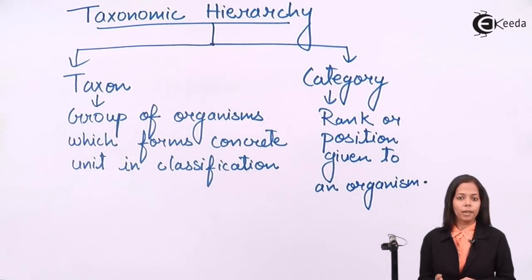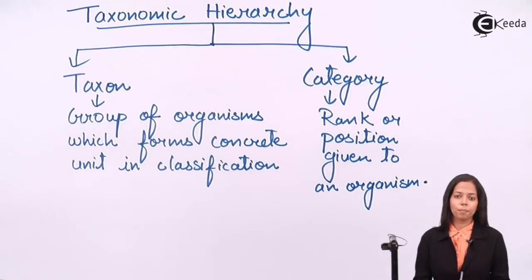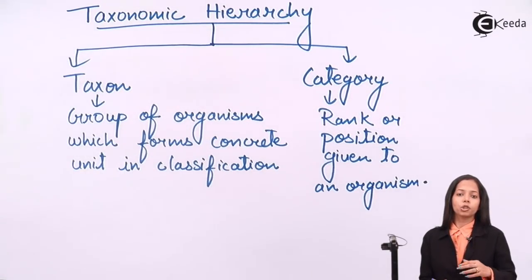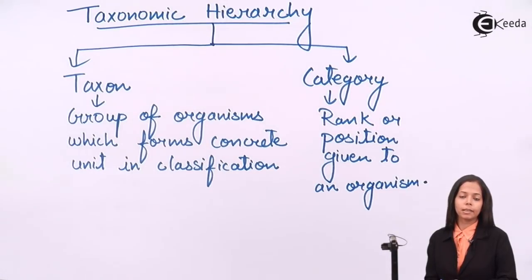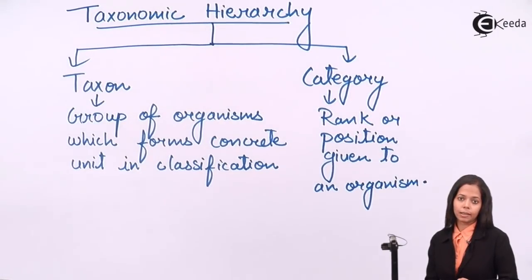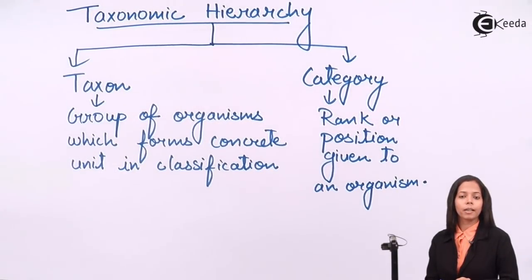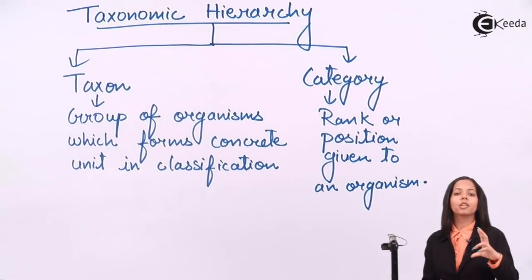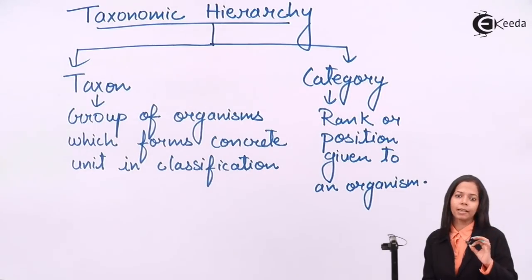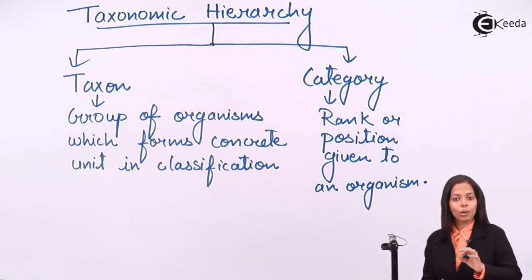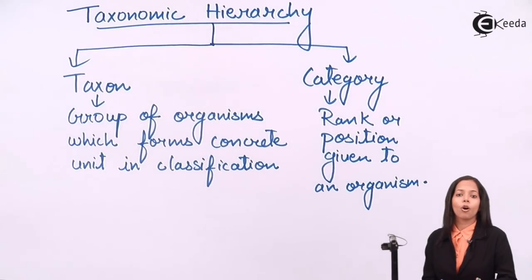Let's compare taxonomic hierarchy with the positions present in your college. The top most position in college is the trustee. After trustee comes the director, then the principal, then vice principal, followed by HODs, then teachers, then learner staff — meaning students. The position itself — principal, vice principal, HOD — is called category. And the person sitting on that position is called taxon.